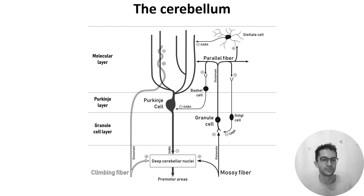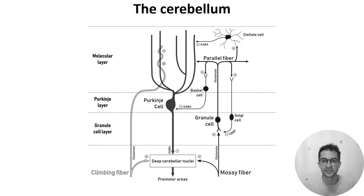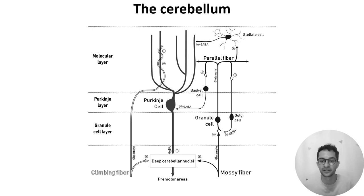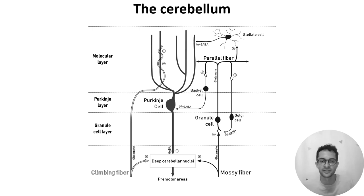So how does information flow through this network? In the mossy fiber pathway on the right, inputs synapse with granule cells, which then send their outputs up into the layer above where they branch out and spread through the Purkinje cell dendritic arbors, forming thousands of excitatory synapses. Because of their structure, these granule cell outputs are known as parallel fibers.